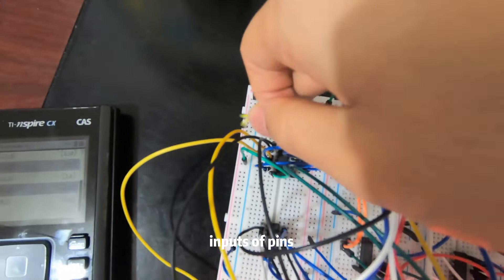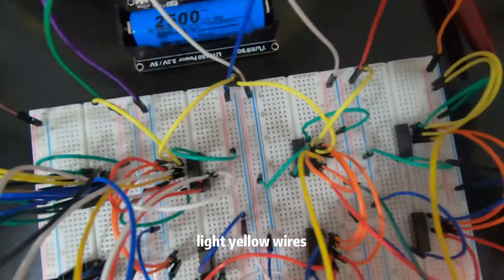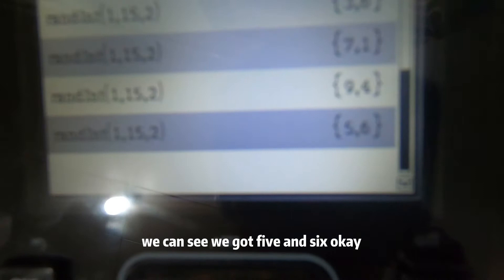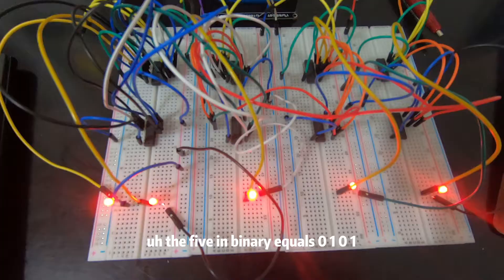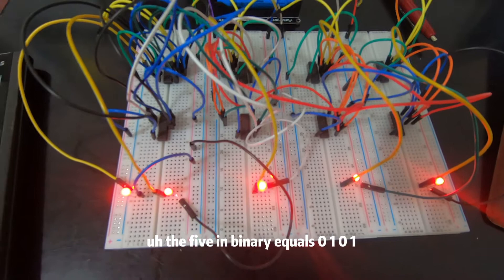We'll use the TI-Inspire to randomly generate two numbers. We press enter and we got five and six. Five in binary equals 0101, and six in binary equals 0110.